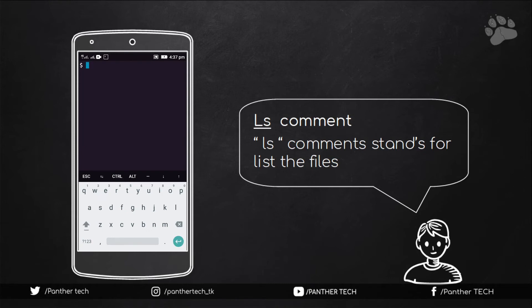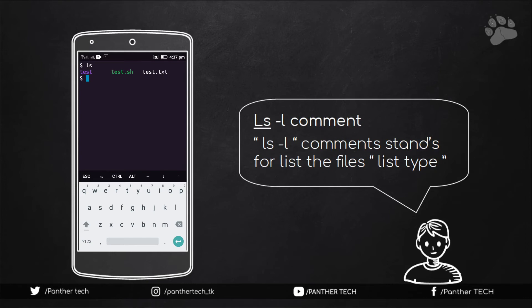Now we are going to look at listing files. For this we use the ls command. ls stands for 'list.' Simply type ls and hit enter — as you can see the files and folders listed. We are also seeing more parameters of the ls command. The first parameter is ls -l, which is used to print the ls output in list format.